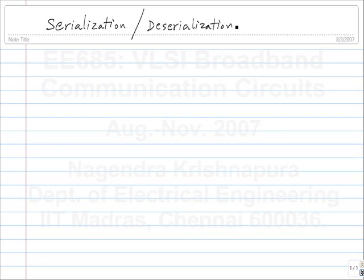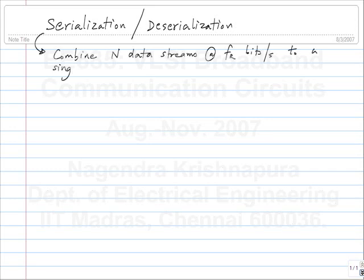Serialization and deserialization. Serialization refers to having multiple streams at a particular data rate and combining all of them. If you have N streams at the original data rate, you combine them into a single stream at N times the original bits per second.